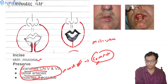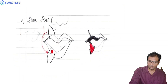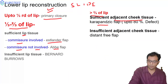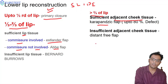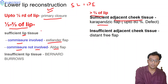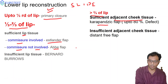The advantage of the Karapandzic flap is that only skin and fat is taken while muscles with their blood and nerve supply are preserved, so oral competence can be preserved. The problem with the Karapandzic flap is microstomia. To summarize the lower lip algorithm: up to one-third — primary closure; one-third to two-thirds with sufficient tissue — Abbe or Estlander flap; insufficient tissue — Bernard-Burow; more than two-thirds with cheek tissue — Karapandzic; insufficient cheek tissue — distant free flap.